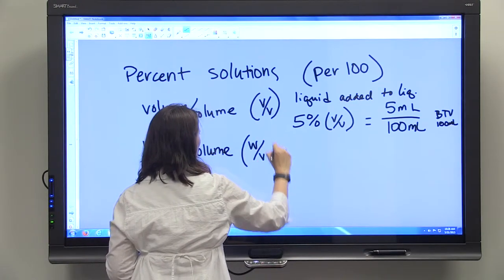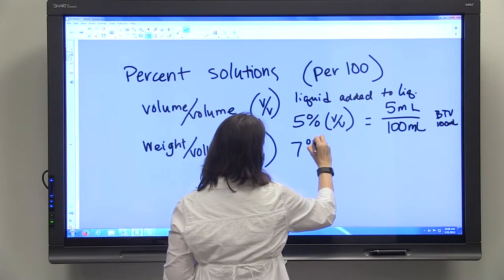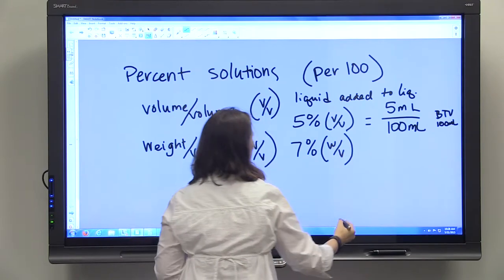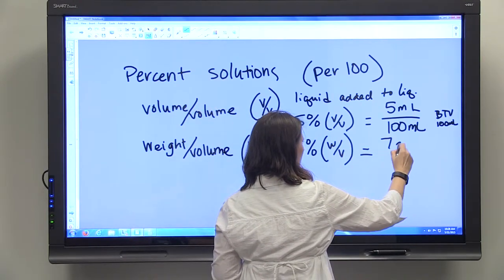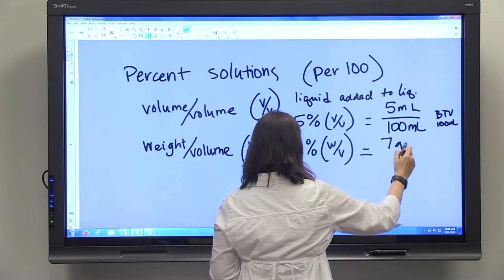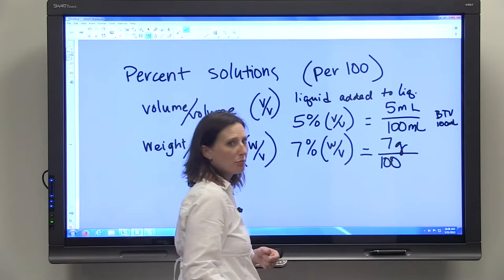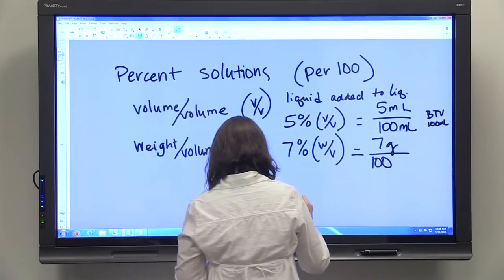Weight to volume is very similar. It's expressed with W over V. So if you're given that you need a 7% weight to volume, you know that you need 7 grams out of 100 grams. But if you're doing an aqueous solution, a water solution, water is